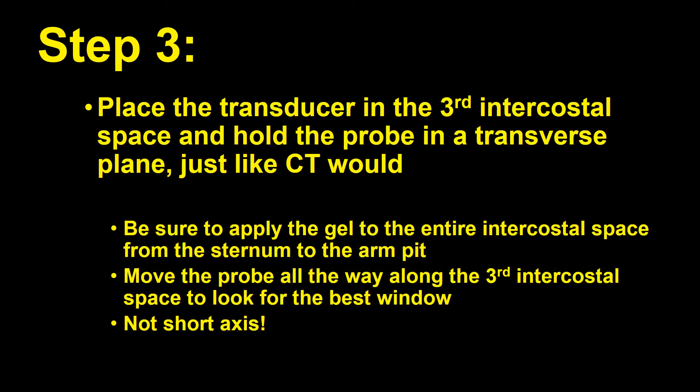Step three: place the transducer in the third intercostal space and hold the probe in a transverse plane, just like CT would do. Be sure to apply the gel to the entire intercostal space, all the way from the sternum to the armpit. Move the probe all the way along the third intercostal space — sometimes it's all the way out to the armpit — to look for the best window. Remember, it's not short axis. You're not going to be able to see coronaries well in short axis.